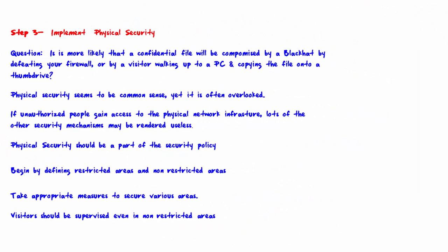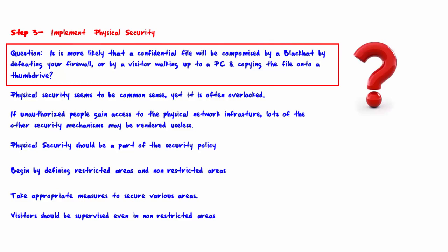Welcome to Step 3: Implement Physical Security. We start with a question: is it more likely that a confidential file will be compromised by a black hat defeating your firewall, or by a visitor or black hat walking up to a PC and copying the file onto a thumb drive? In general, the answer is the latter.